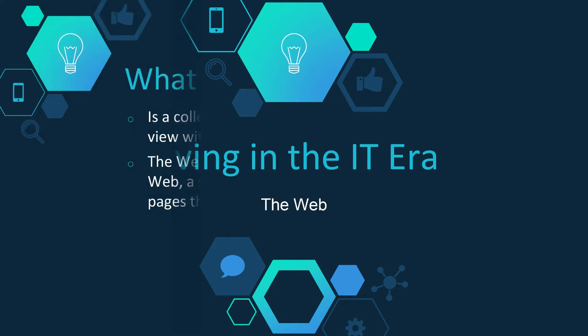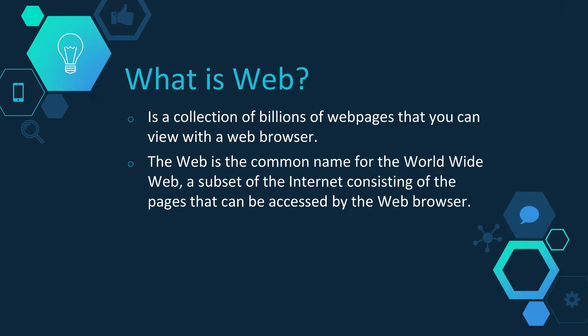Good day everyone. Let us first define the web, also known as the World Wide Web. The web is a subset of the internet that consists of pages that can be accessed using a web browser. Many people confuse the web and the internet and use the terms interchangeably. However, the term internet actually refers to the global network of servers that enables information sharing via the web.